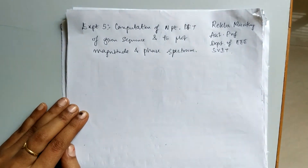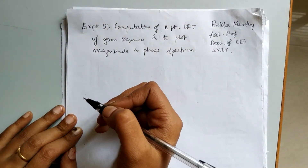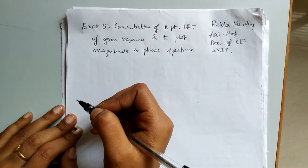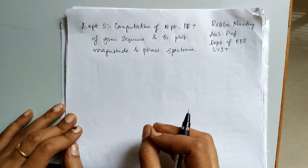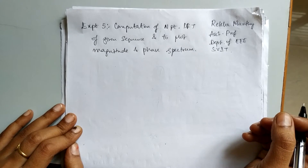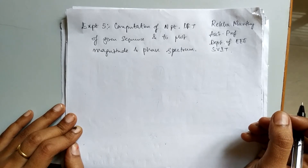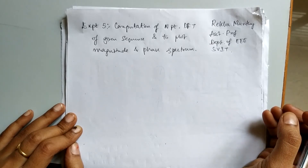Before we start to compute the DFT of any given sequence, what is a DFT? It is the Discrete Fourier Transform, which is mainly used for performing the frequency analysis of discrete time signals. DFT gives a discrete frequency domain representation, whereas other transforms are continuous in the frequency domain.